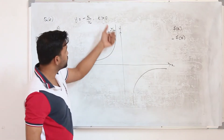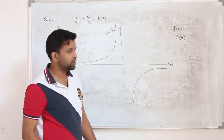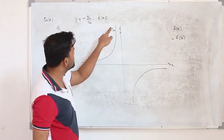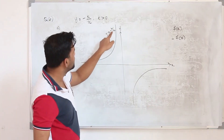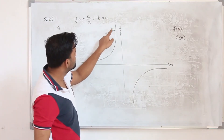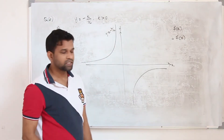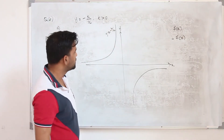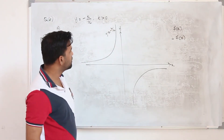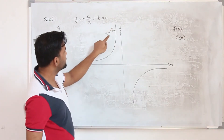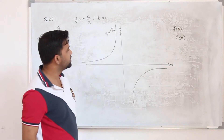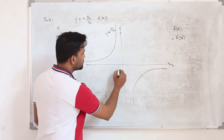That's y equals minus k upon x. Note that k is a positive number, because if k were negative, minus times minus would give plus, which would be the same as k upon x. So this is our graph y equals minus k upon x.